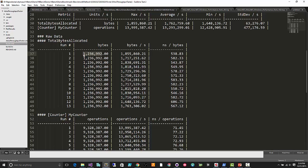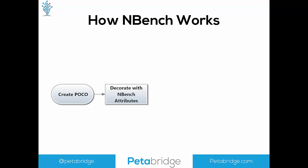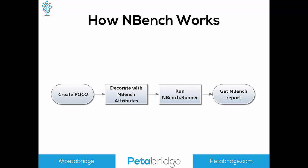That's nBench in a nutshell. To create an nBench benchmark, you define a simple POCO class — a C# class with a default constructor — and decorate it with nBench attributes: PerfSetup, PerfCleanup, PerfBenchmark, and measurement attributes to instrument what you want to measure. Then you run the nBench runner, which produces a markdown report and console output. Finally, you review the report from the nBench runner.